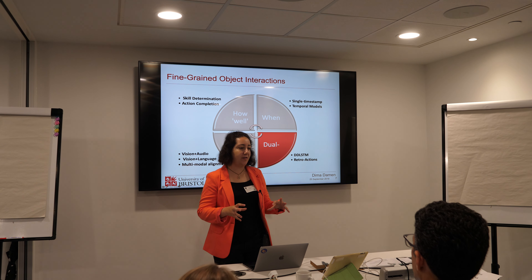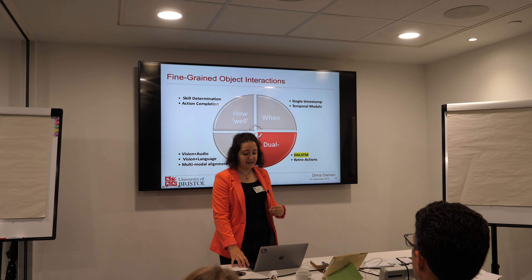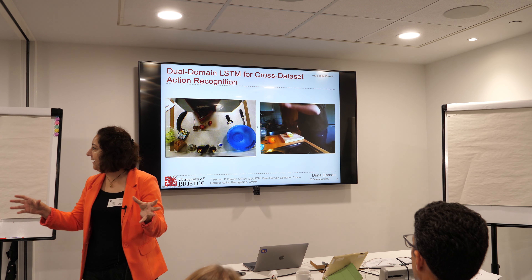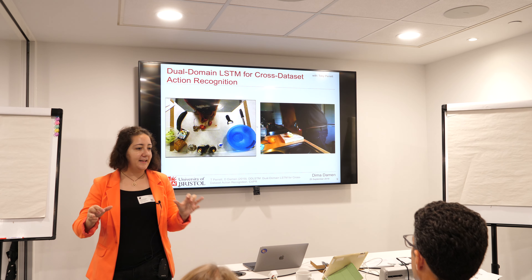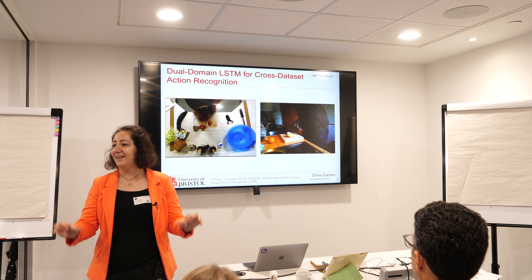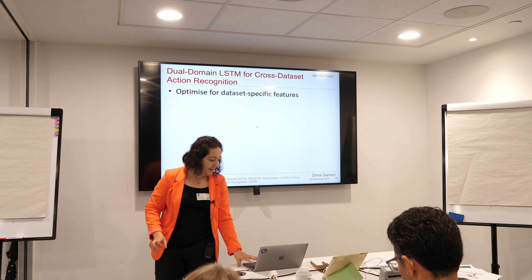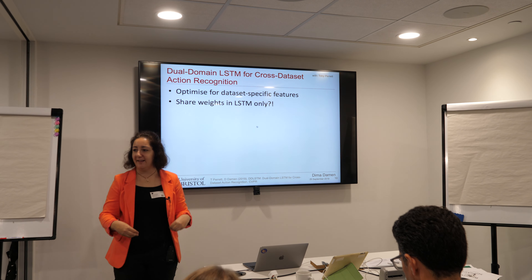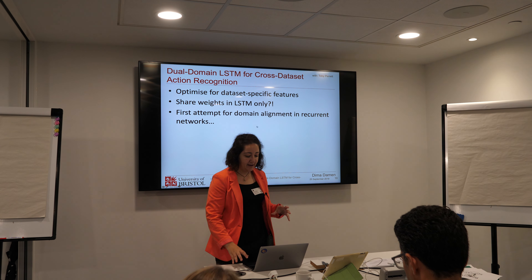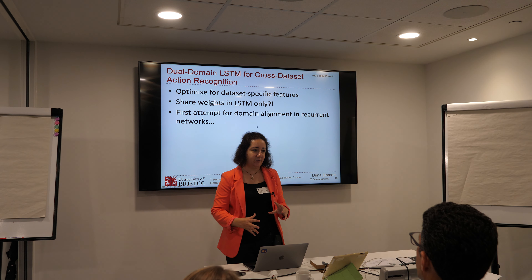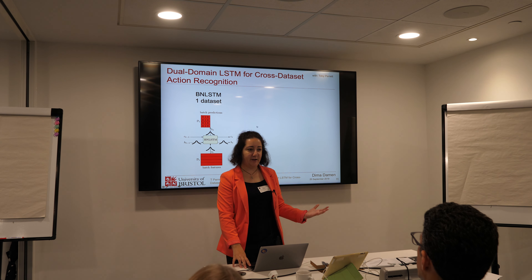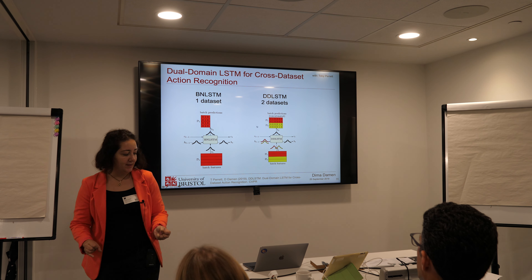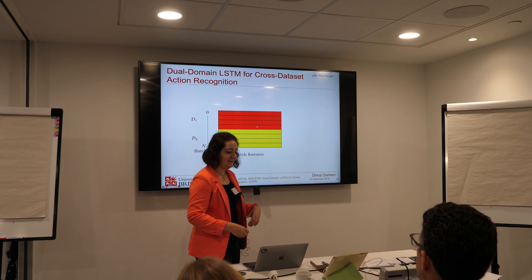DDLSTM is the concept of looking at two videos captured in different settings — off-the-shelf datasets like 50 Salads and MPI — where the visual features are very different. We asked: if you start from dataset-specific features optimized for a particular viewpoint, is there something you can learn at the temporal level? Is there something you can share in these LSTMs? This was the first attempt to see if there is some domain alignment interest in recurrent networks. You start from a batch-normalized LSTM, and the main trick is to have different batch normalization parameters for these different datasets.